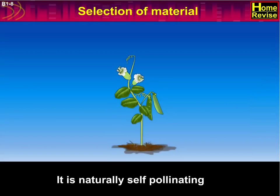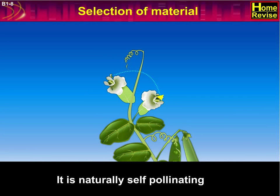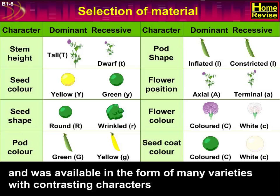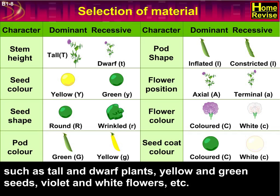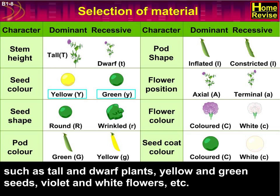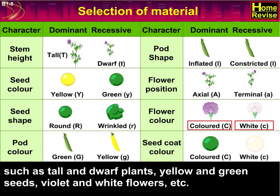It is naturally self-pollinating and was available in the form of many varieties with contrasting characters, such as tall and dwarf plants, yellow and green seeds, and violet and white flowers.